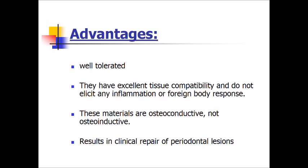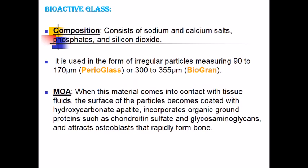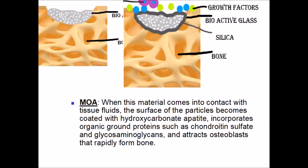Calcium phosphate biomaterials: hydroxyapatite has a calcium-to-phosphate ratio of 1.67; tricalcium phosphate has a ratio of 1.5. Hydroxyapatite is non-bioresorbable, while tricalcium phosphate is partially resorbable. Hydroxyapatite is available in macroporous and microporous forms; commercial names are G-Bone and Cybograft. Tricalcium phosphate is RTR. They are well-tolerated, have excellent tissue compatibility, do not elicit inflammatory or foreign body response, are osteoconductive but not osteoinductive. Bioactive glasses consist of sodium and calcium salts, phosphates, and silicon dioxide. Used as irregular particles measuring 90–115 micrometers in PerioGlas and 300–355 micrometers in BioGran. When in contact with tissue fluid, the particle surface becomes coated with hydroxycarbonate apatite, which incorporates organic proteins such as chondroitin sulfate and glucosaminoglycan, attracting osteoblasts and promoting bone formation.